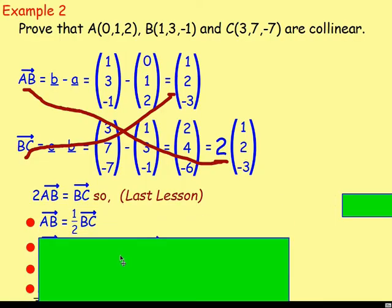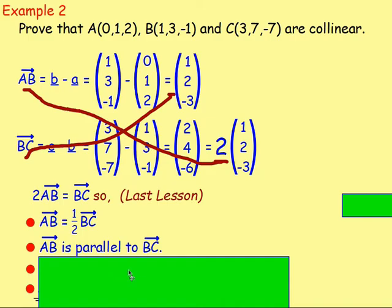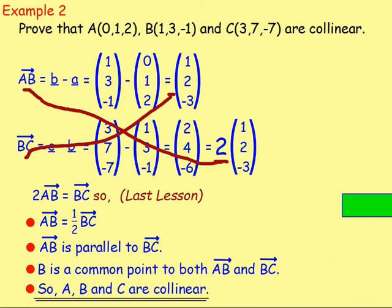Expressing one vector as a multiple of the other: if you divide both sides by 2, we can say AB equals a half BC. That means the vectors AB and BC will be parallel. You have to say there is a common point — B is a common point in AB and BC — and since they're parallel, you know that AB and BC are collinear.